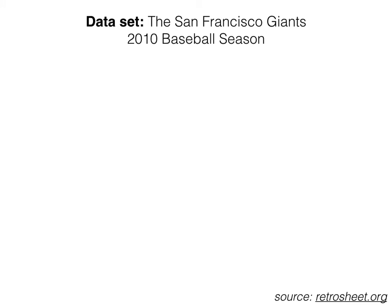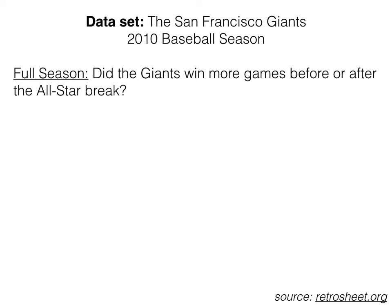Okay, so the 2010 season was very important for Giants fans, because it was the first time since 1954 the Giants had won the World Series. So we're going to see today if there are any specific variables that predict which games they won and lost. First, we'll be looking at data from the full season, all 162 games. And we'll be asking, did the Giants win more games before or after the All-Star break? The All-Star break represents a roughly halfway point in the season. So teams are often discussed as doing well at the All-Star break, or maybe they weren't great at the All-Star break but they played really well in the second half of the season.